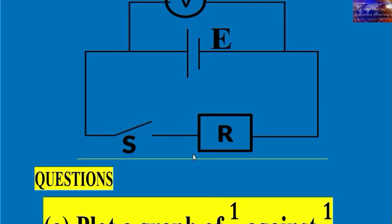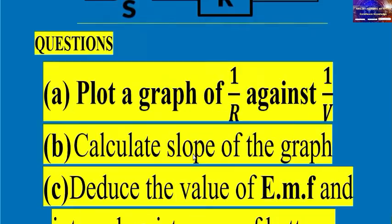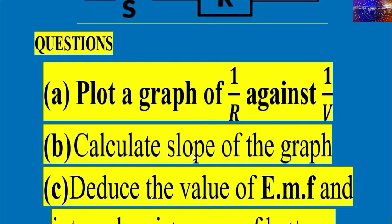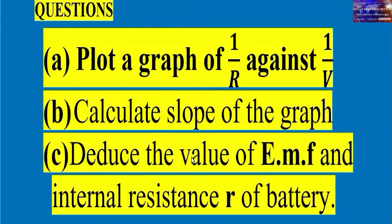After examining the experimental circuit, we proceed to look at the equations. Question one: plot a graph of 1/R (reciprocal resistance) against 1/V (reciprocal of potential difference). Question two: calculate the slope of the graph. Question three: deduce or calculate the value of EMF and the internal resistance.